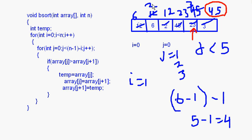The second time through: 6 and 2 are compared — 2 comes here, 6 goes there. Then 6 and 12 are compared — 6 goes there and 2 comes here. Then 12 and 23, 23 and 45 — these are already in sorted order so no change. Then 23 and 3: 3 comes here and 23 goes there. So 23 is the next heaviest element and settles in its position.